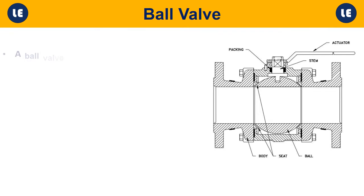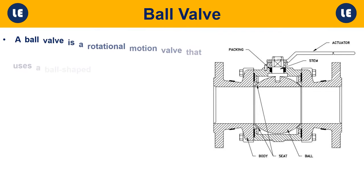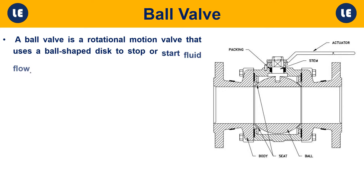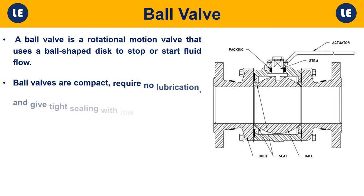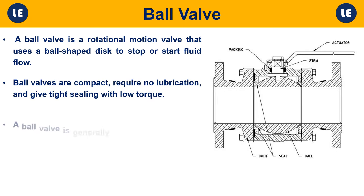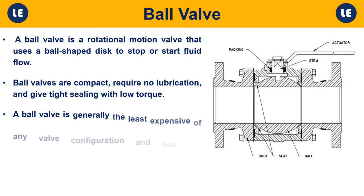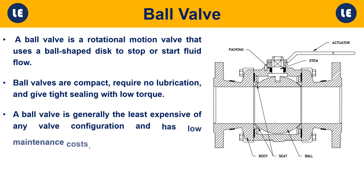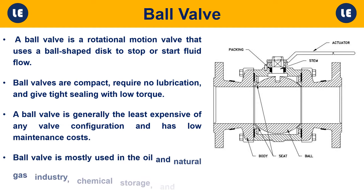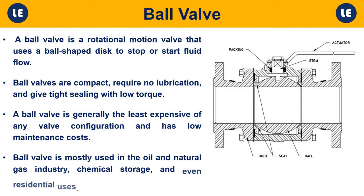Ball valve: A ball valve is a rotational motion valve that uses a ball-shaped disc to stop or start fluid flow. Ball valves are compact, require no lubrication, and give tight sealing with low torque. A ball valve is generally the least expensive of any valve configuration and has low maintenance costs. Ball valves are mostly used in the oil and natural gas industry, chemical storage, and even residential uses.